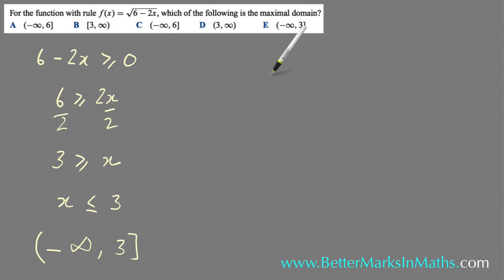If you pick any x number in that set of numbers, let's pick 0. If you go 6 minus 2 times 0, 2 times 0 is 0, 6 minus 0 is 6, and the square root of 6, you can get an answer for that.